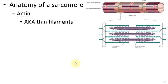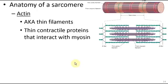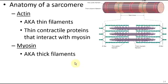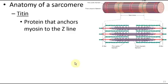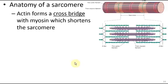Actin filaments are also known as thin filaments for obvious reasons, and they interact with myosin, the purplish-colored ones, which are called thick filaments because they're thicker. I added red lines here to show titin — T-I-T-I-N — the protein that anchors myosin to the z-disc. Actin forms what is called a cross bridge with myosin, and when they interact, they shorten with each other.